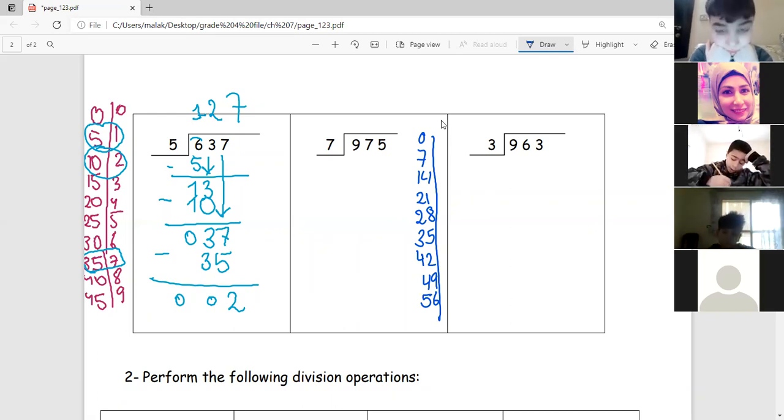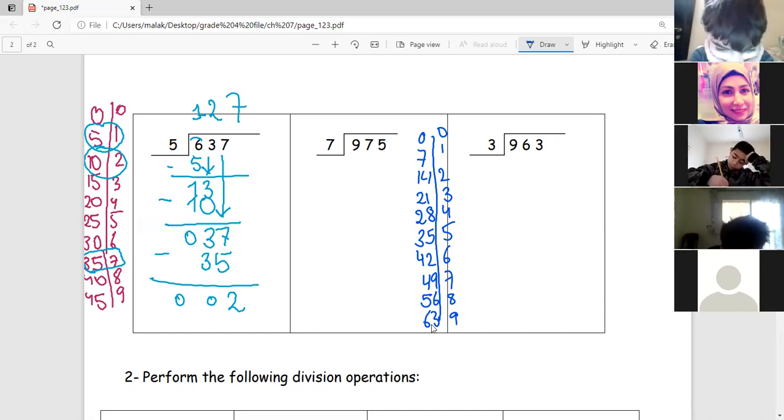Fifty-six, fifty-six, fifty-six, excellent. Then sixty-three, sixty-three, sixty-three, bravo. Okay, let's count them on the other side: zero, one, two, three, four, five, six, seven, eight, and nine. Yalla Yasmin, start. How do we divide? We start from where? Explain for your friends.